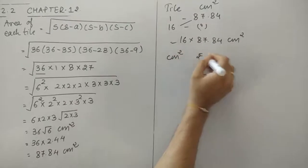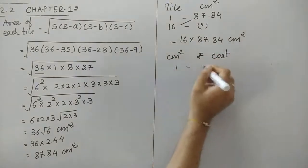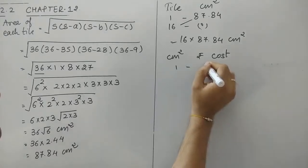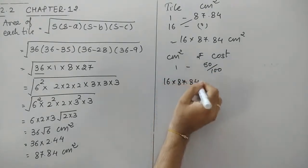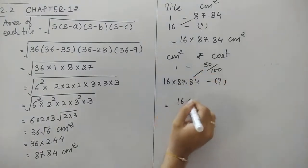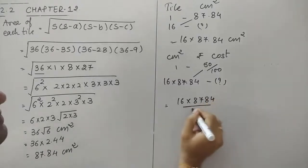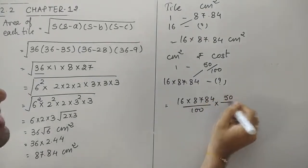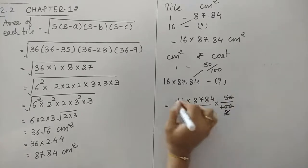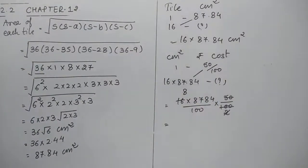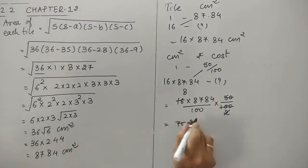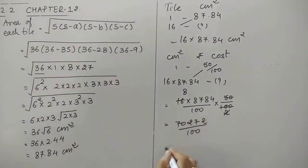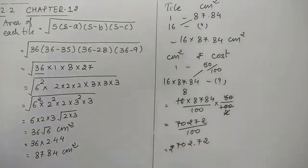The cost is 50 paisa per centimeter square, which is 50/100 = 1/2 rupee. So the total cost = 16 × 87.84 × (50/100). Working this out: 16 × 87.84 = 1405.44, divided by 2 gives approximately 702 rupees and 72 paisa. This is the approximate cost.